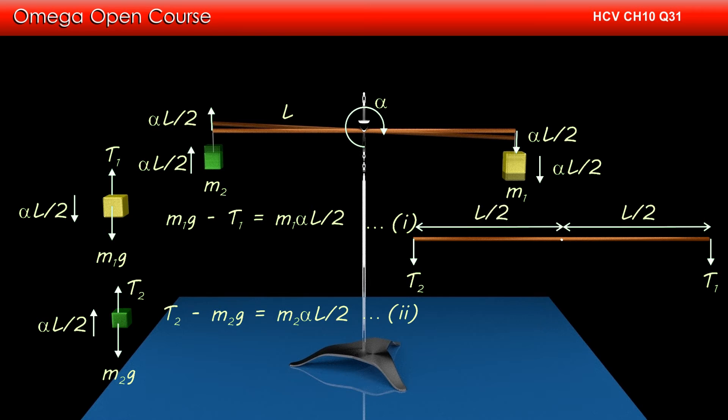Therefore, net torque on it must be zero. This means torque due to t1 about its center must cancel out the torque due to t2. In other words, both these torques must be equal in magnitude and opposite in direction.